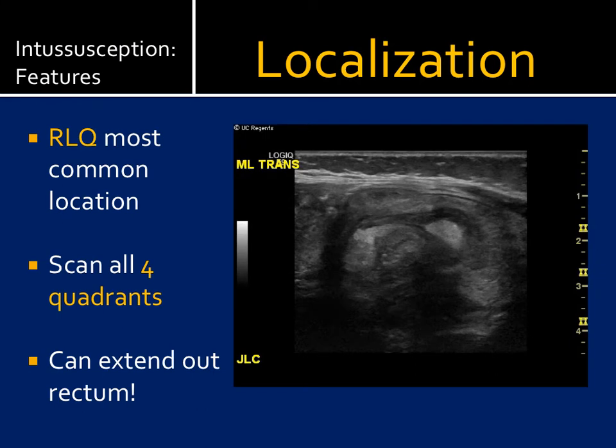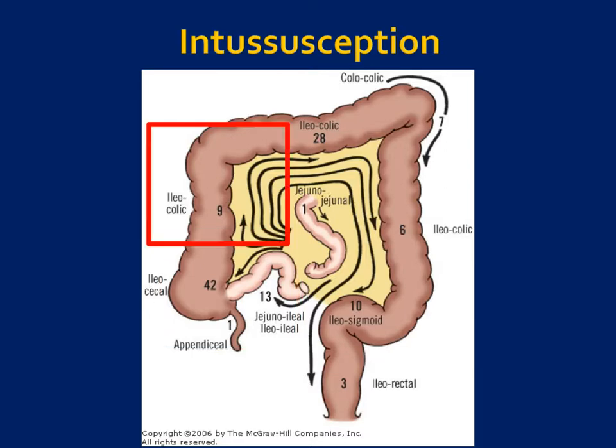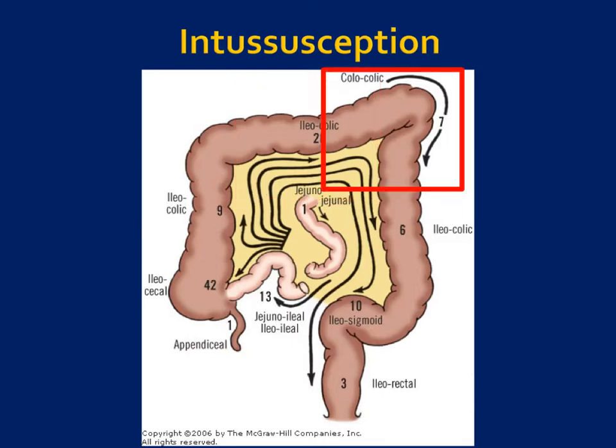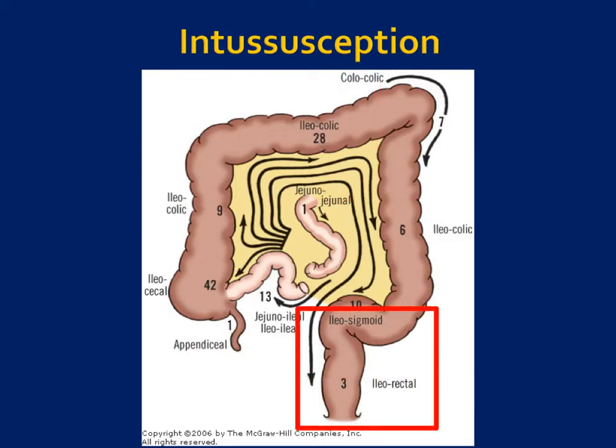The right lower quadrant is the most common location, but you want to be sure to scan all four quadrants. As a trainee, I have seen these extend all the way out to the right. The terminal ileum is a common starting point. We want to make sure we've looked at all areas because it really can extend quite far.